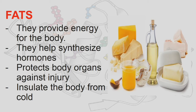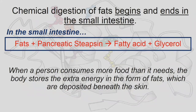Fats help synthesize hormones, protect body organs against injury, and insulate the body from cold. The chemical digestion of fats begins and ends in the small intestine. Fats produce fatty acids and glycerol with the aid of pancreatic lipase. The chemical digestion of fats begins when the liver secretes bile, which is stored in the gallbladder. When the gallbladder releases bile — triggered by food entering the upper portion of the small intestine known as the duodenum — bile changes fats into tiny droplets.